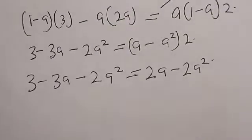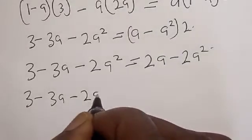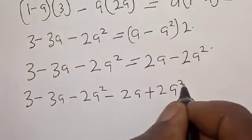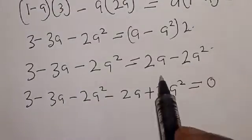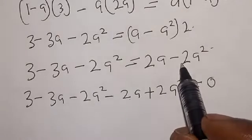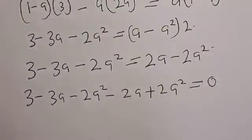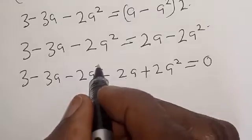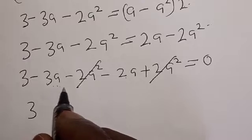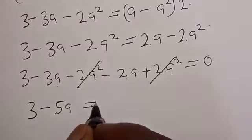Now let's equate everything to 0. We have 3 minus 3a minus 2a squared minus 2a plus 2a squared equal to 0. Moving terms across the equals sign: the minus 2a becomes plus 2a, and plus 2a squared cancels with minus 2a squared.